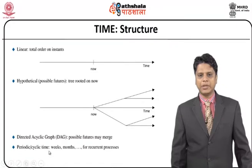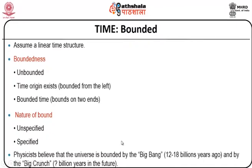There can be periodic and cyclic time, which might include weeks and months for recurrent processes. Time not only uses structure, it also uses bounded values. Assume a linear time structure — if it is supposed to be bounded, on a constraint of boundedness, it can be unbounded, it can have a time origin that exists on a bound from the left, or bounded time bounds on two ends. We might call the nature of the bound as unspecified or specified. In case of a specified bound, the interval is known, whereas in case of an unspecified bound, the end point is not known.